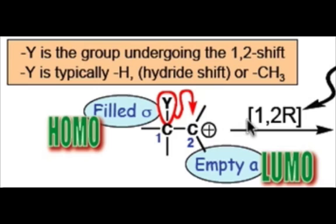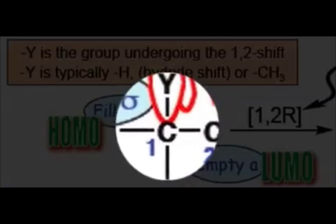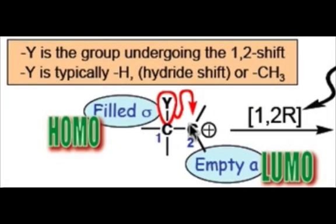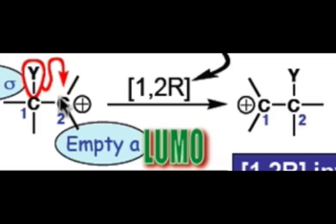The reason it gets the numbering 1,2-R is that the sigma bond on atom 1 will migrate over to atom 2. And this is going to be sideways overlap, always sideways overlap, therefore giving a pi-type interaction. And this elementary step involves simultaneous sigma bond breaking and sigma bond making.